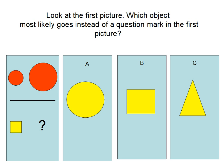Look at the first picture. Which object most likely goes instead of a question mark in the first picture?